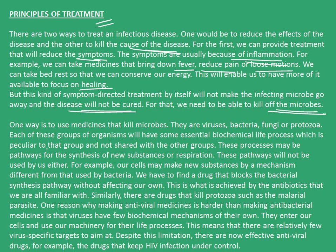For that, we need to be able to kill off the microbes. One way is to use medicines that kill microbes — viruses, bacteria, fungi, and protozoa, as we had seen earlier. Each of these groups of organisms will have some essential biochemical life process peculiar to that group and not shared with others. These processes may be pathways for synthesis of new substances or respiration, and these pathways will not be used by us either. For example, our cells make new substances by a mechanism different from that used by bacteria. We have to find a drug that blocks the bacterial synthesis pathway without affecting our own. This is what is achieved by the antibiotics that we are familiar with.